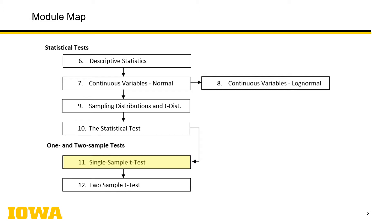If you've been following along, the module map shown here is now getting a little more sophisticated. In order to understand how to do a single sample t-test, we first need to understand what a hypothesis test is. We need to be informed by module 10, which is dependent on modules 6, 7, and 9. So we're building up our knowledge, and this also emphasizes that you should have reviewed modules 6, 7, 9, and 10 prior to listening to this module.